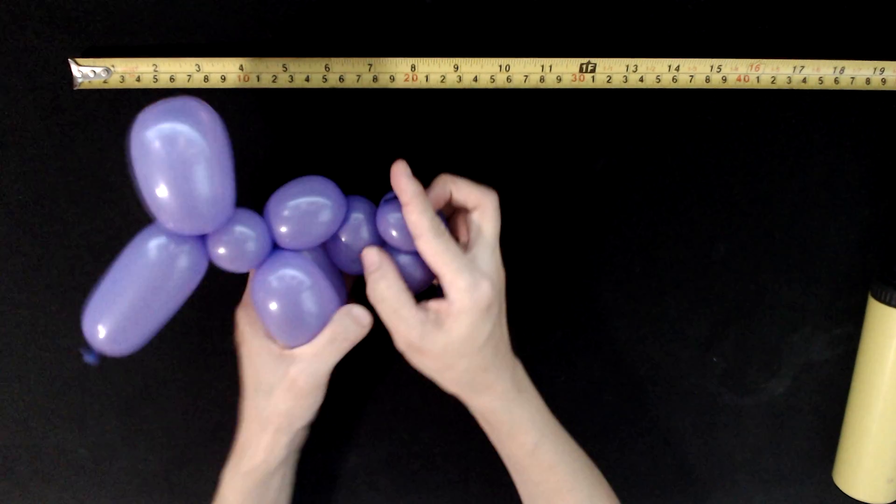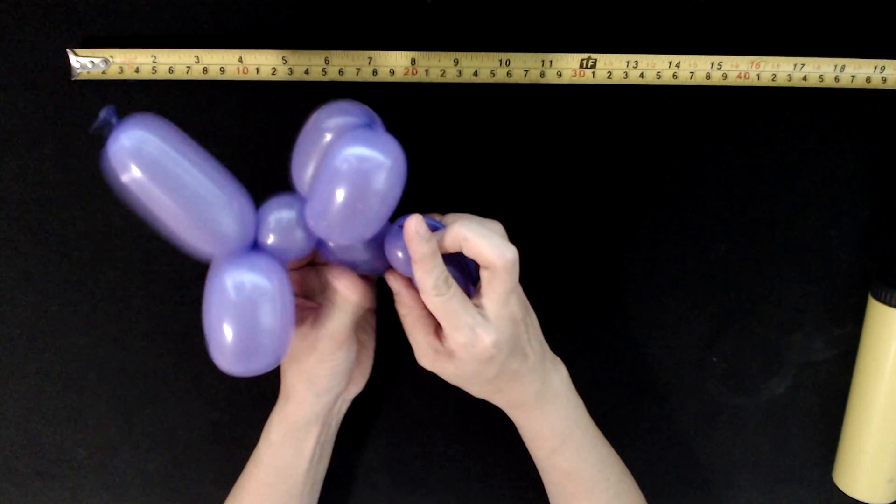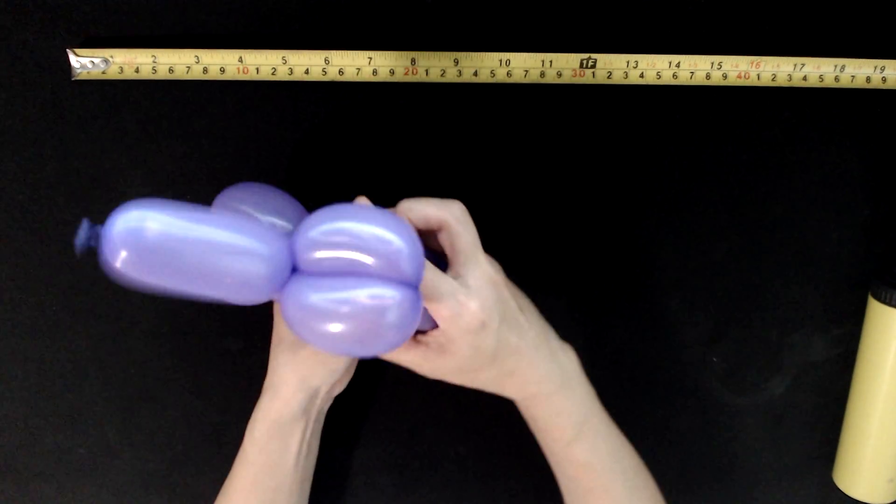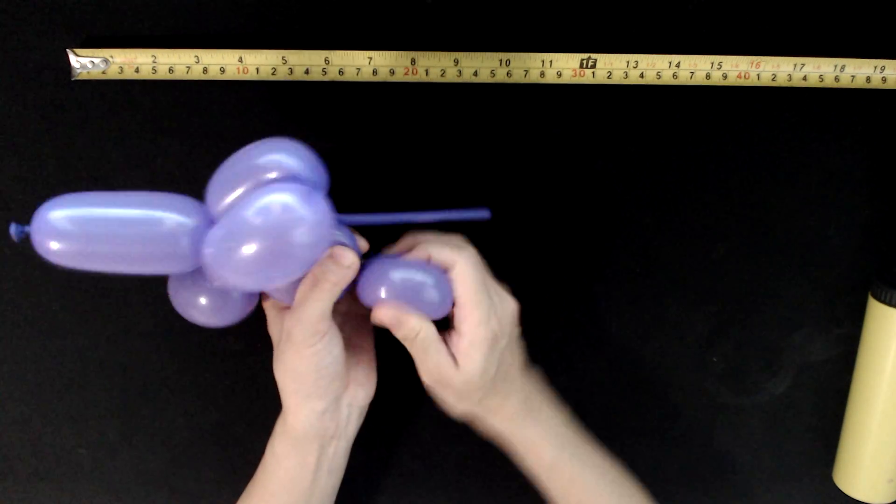And the small part is the body. The part behind the face is the tail.